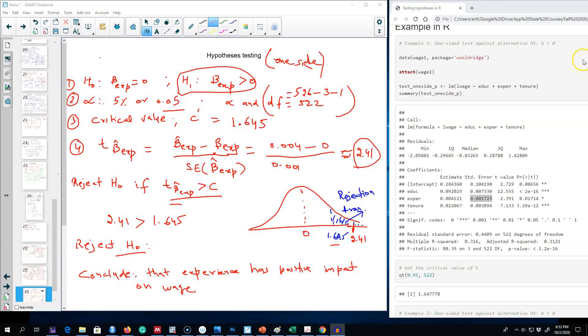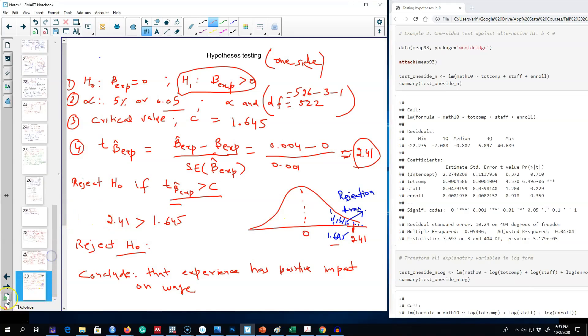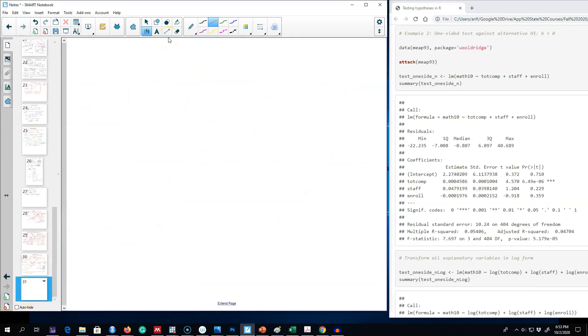Okay, so in the previous video I was talking about testing one-sided hypotheses where our alternative hypothesis was on the positive side. That is, we assume that beta J is positive against our null hypothesis that it has no impact on our variable of interest. In the next example, I'm going to follow the same steps and show you what if we set up our hypothesis that our variable of interest is having a negative effect on Y.